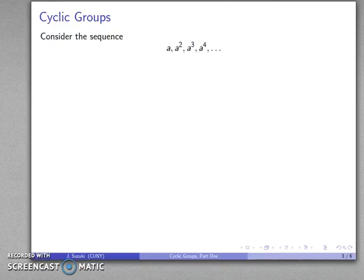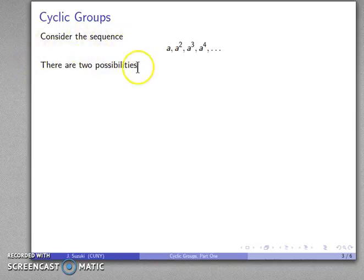Now let's consider this sequence: A, A squared, A cubed, A to the fourth, and so on. Well, there's two possibilities. Always look at what the possibilities are. And there's two possibilities here.